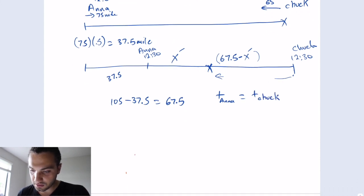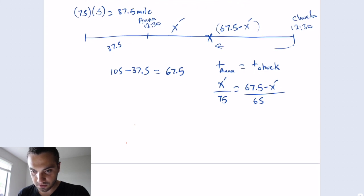So T for Anna is going to be distance x prime divided by the speed, which is 75. And then for T Chuck, Chuck is going to be 67.5 minus x prime divided by the speed, 65. Multiply each side with each other. You'll get 140 x prime equal 75 times 67.5. And then x prime will be equal to 36.16 miles.